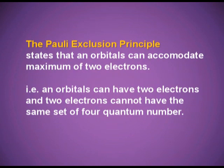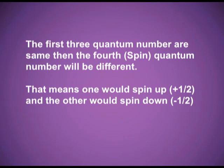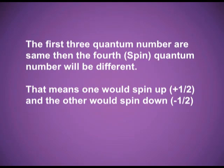Pauli's exclusion principle states that an orbital can accommodate a maximum of two electrons, and those two electrons cannot have the same set of four quantum numbers. If the first three quantum numbers are the same, then the spin quantum number will be different — one electron spins clockwise (value +½) and the other spins anticlockwise (value −½). So no two electrons in an atom can have the same set of four quantum numbers.